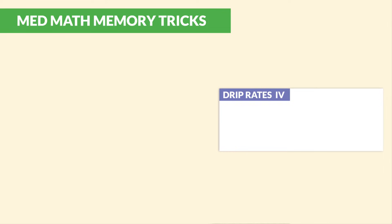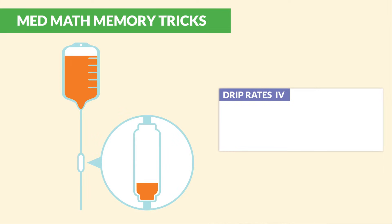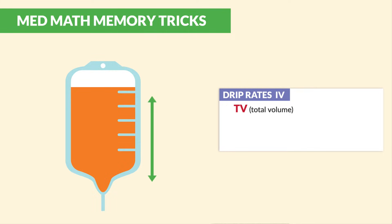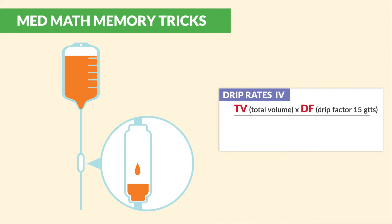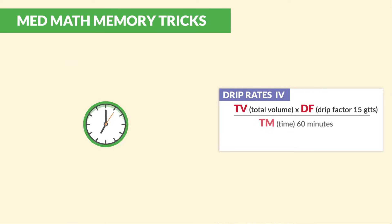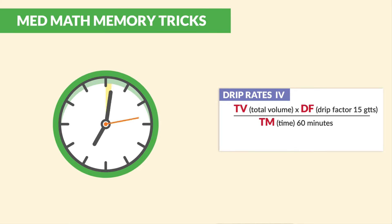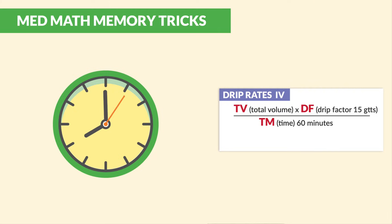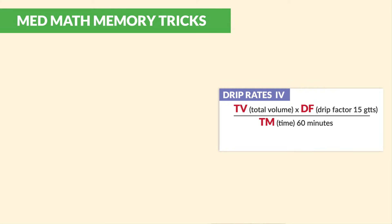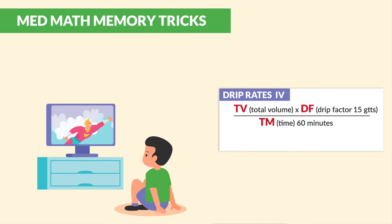For drip rates for an IV, we have TV for total volume, DF for drip factor — which is 15 drops per minute — over time, which is typically 60 minutes, unless you're using a pump, then it's one for one hour. The simplest way to remember this is just look at the big TV, DF, and TM.